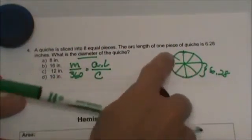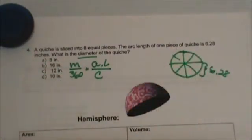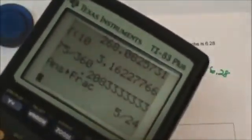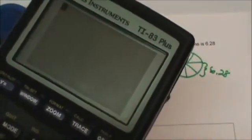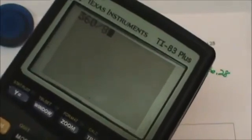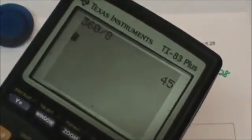What's our measure? Well let's see. We have 8 slices. So what are we going to have to do? We are going to have to take 360 and divide it by 8. 360 divided equally into 8 slices gives us 45 degrees.